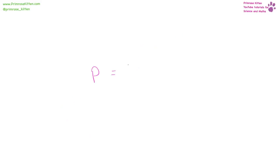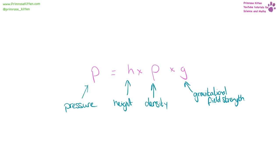Pressure equals height times density (lowercase rho) times gravitational field strength. Pressure is measured in pascals, height in meters, density in kilograms per meter cubed, and gravitational field strength is 9.8 newtons per kilogram.